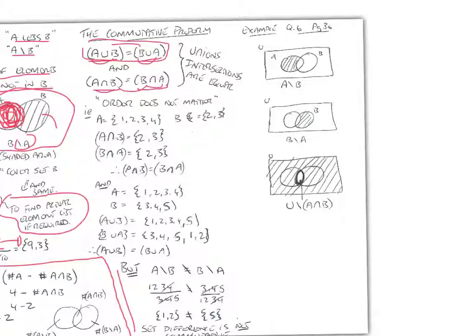So, here's an example. If A is 1, 2, 3, 4, B is 2 and 3, A intersection B is 2, 3, B intersection A is 2, 3, and that just shows you that A intersection B is the same as B intersection A. You can stop the video and work those out yourself if you want.